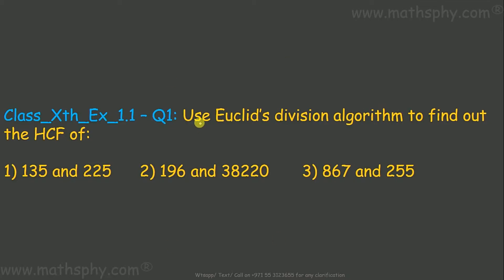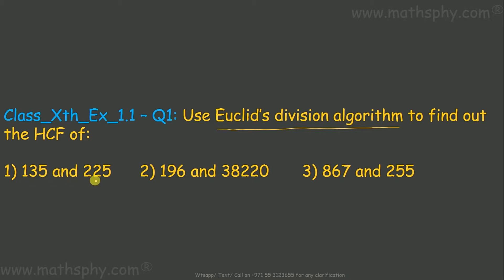This question says: use Euclid's division algorithm to find out the highest common factor (HCF) of three pairs of numbers. We already know Euclid's division algorithm. We have to find the HCF of these numbers using this method. HCF of 135 and 225 means the highest number which can divide both 135 and 225 and leaves no remainder — remainder should be 0.